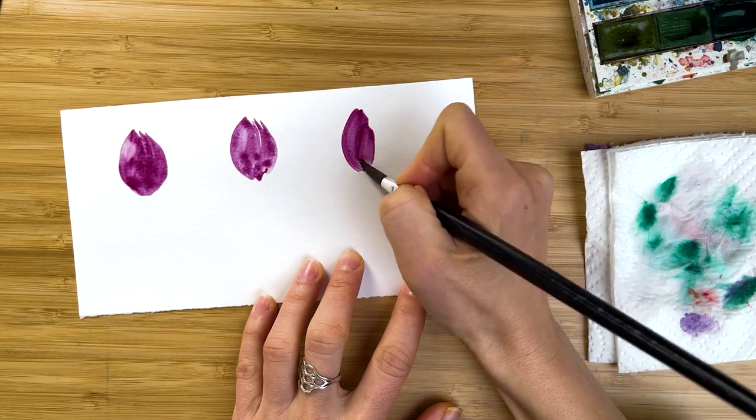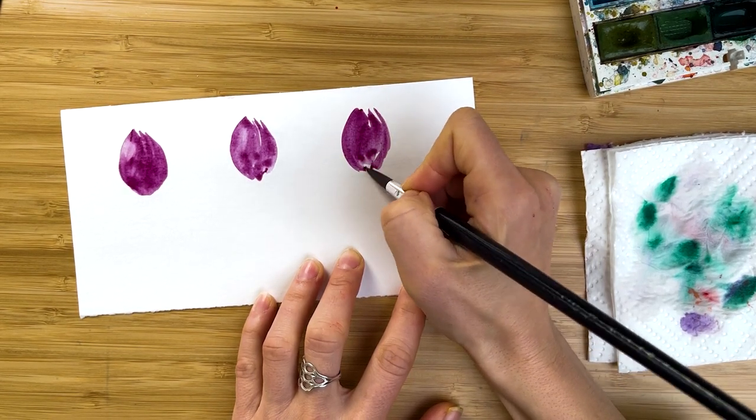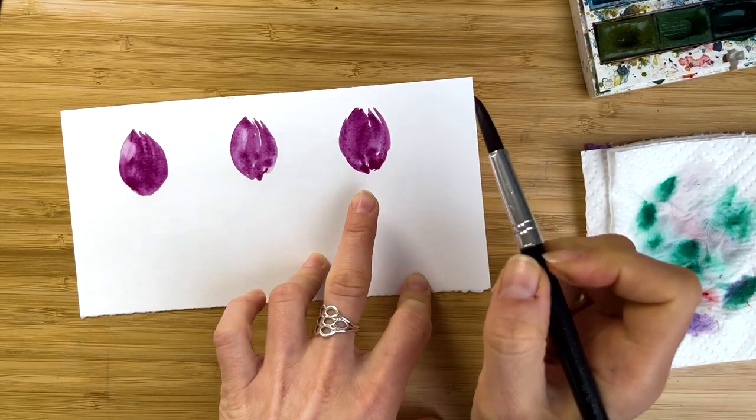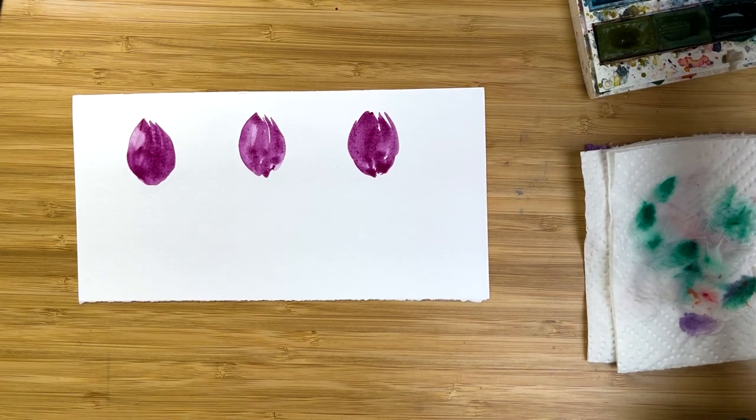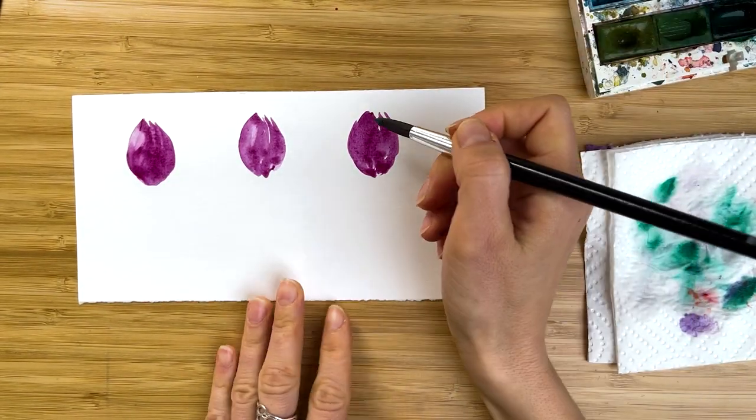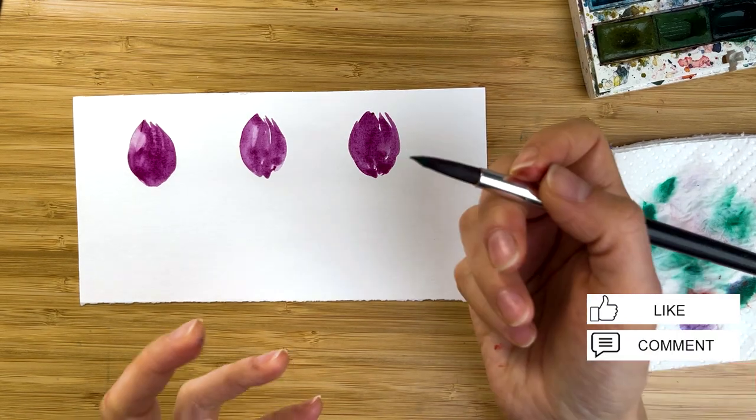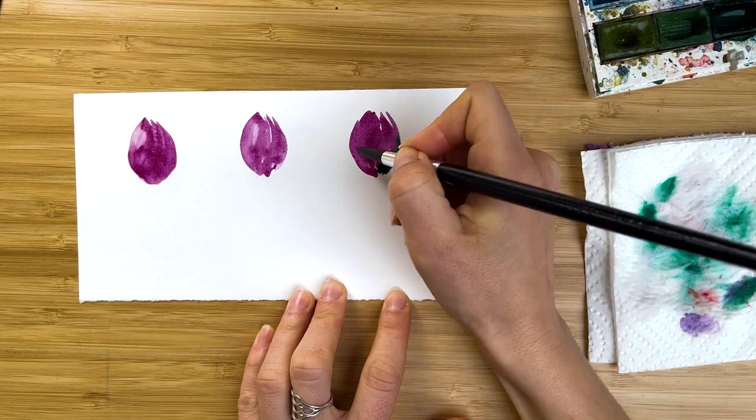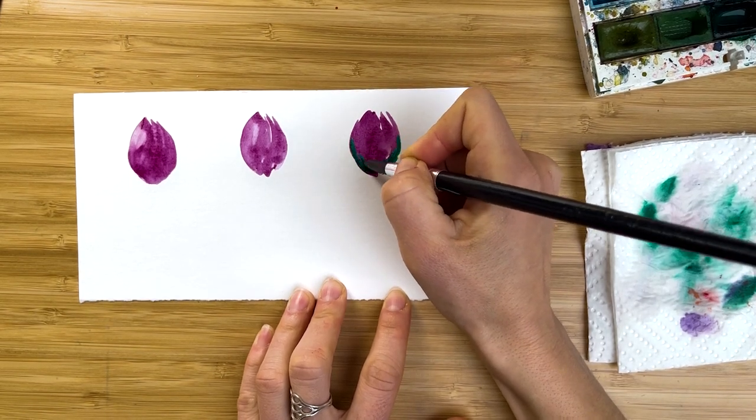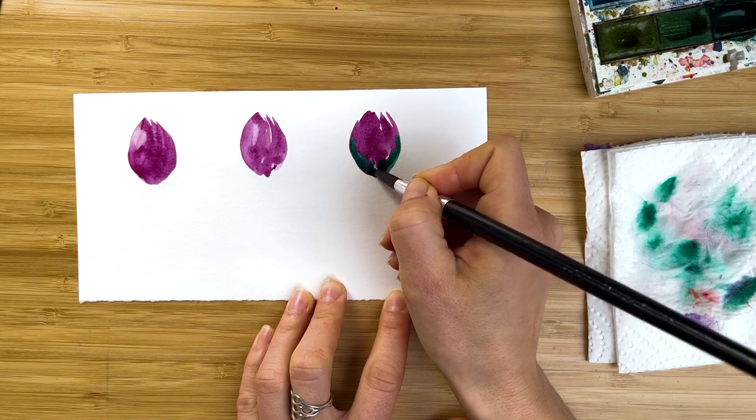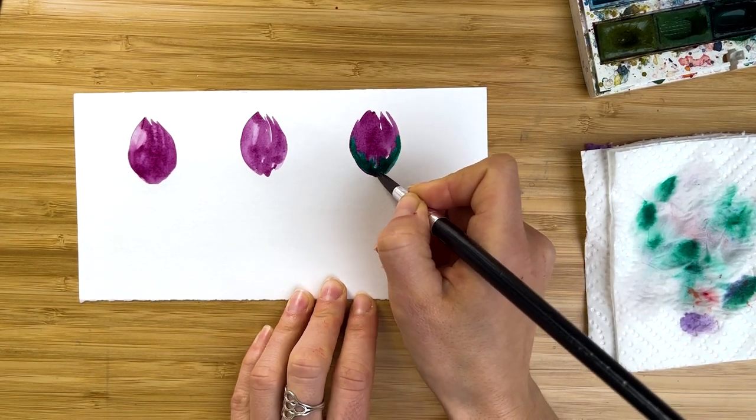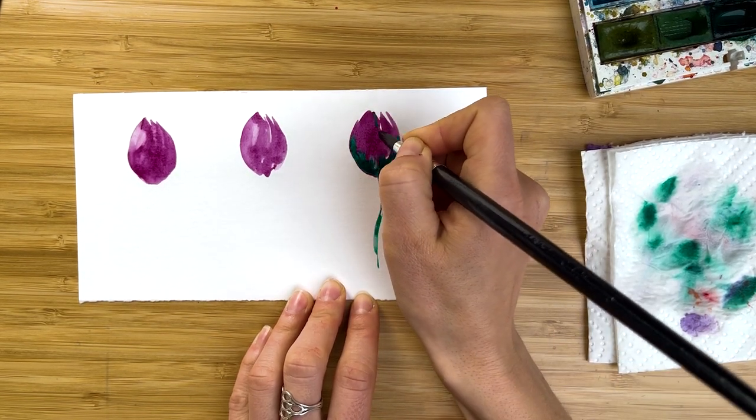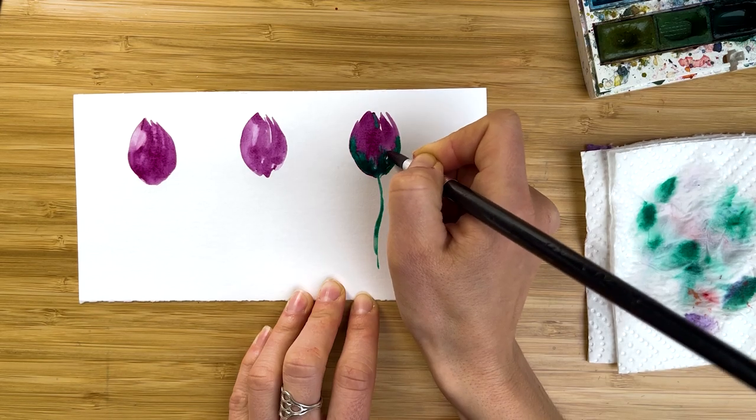I will show you on the example of these small tiny tulips. And let's say I want to add extra color, green color or just the second layer of the same color to make it more bold. And I could either do it while the paper is completely wet and I just leave the watercolor color as it wants to do.